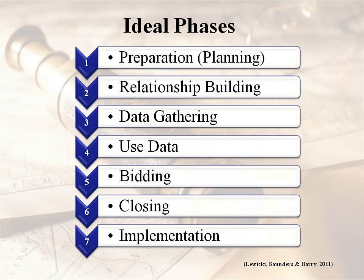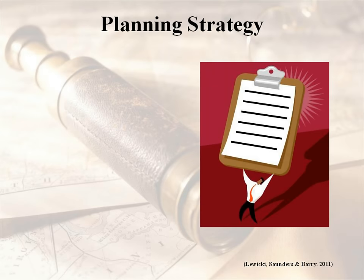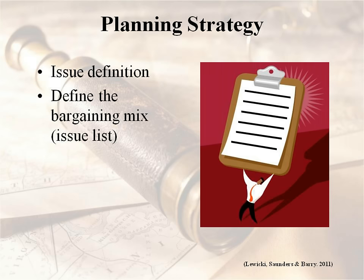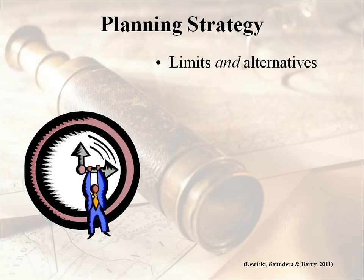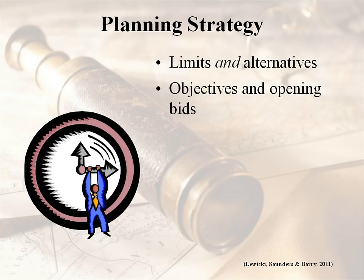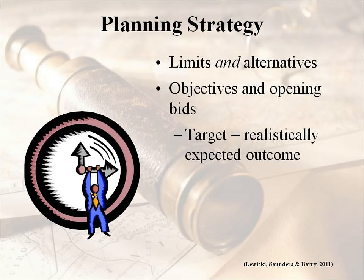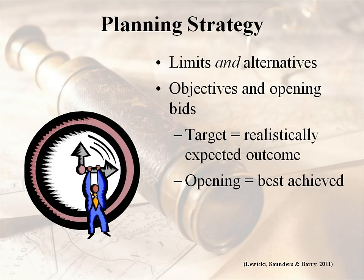The seven phases are: preparation, relationship building, data gathering, data using, bidding, closing, and implementation. When planning your strategy — both in terms of outcomes and process — you need to define the issues, assemble them, and define the bargaining mix, which is simply combining that list of issues and deciding which ones have priority. You need to define your interests: why do we want what we want as an outcome? You need to know your limits and the alternatives — what's the least we can accept and what other options might we run into? Set your objectives, your targets, and your opening bids. Your target is the outcome you realistically expect; your opening is the best that can be achieved to start with, and you hope to settle somewhere in the middle.